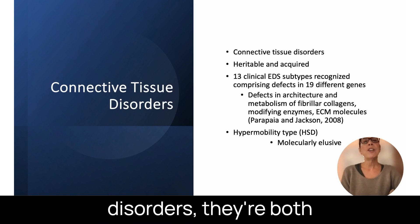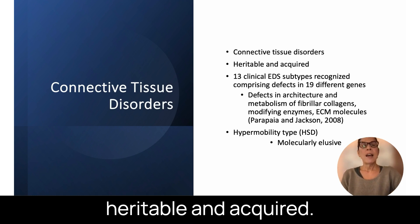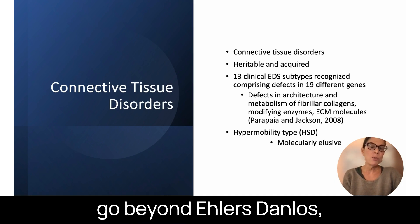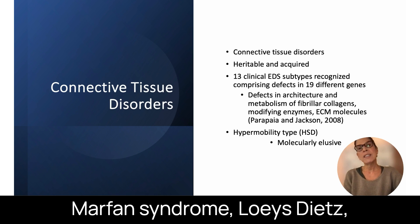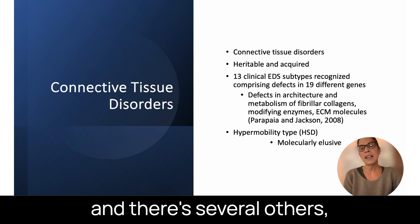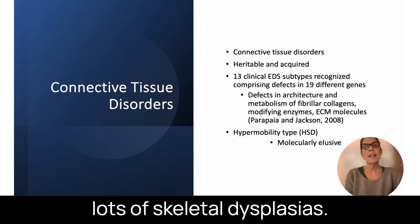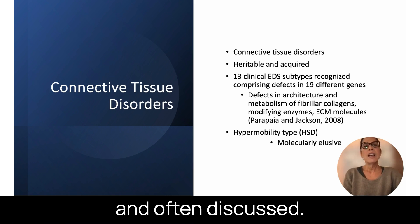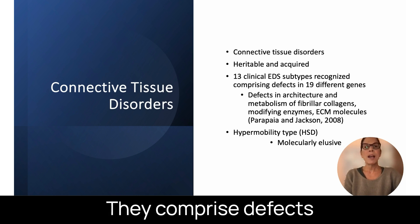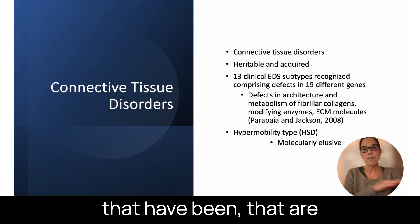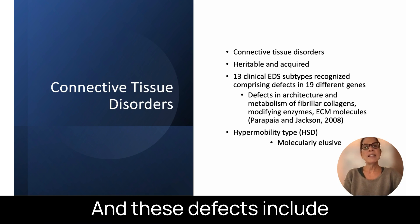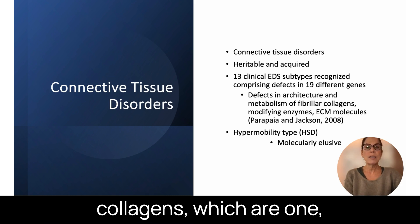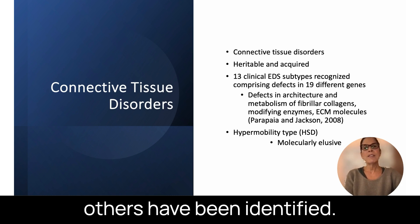Connective tissue disorders are both heritable and acquired. There are several hundred heritable disorders of connective tissue that go beyond EDS, which we often talk about — there's Stickler syndrome, Marfan syndrome, Loeys-Dietz, and several others, lots of skeletal dysplasias. The EDS subtypes are well recognized; there are 13 clinical subtypes comprising defects found in 19 different genes. These defects include defects in the architecture and metabolism of the fibrillar collagens — types 1, 3, and 5, though some others have been identified.